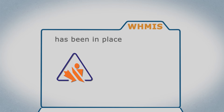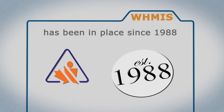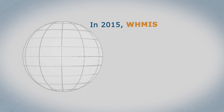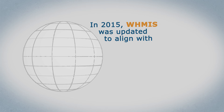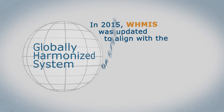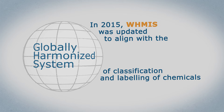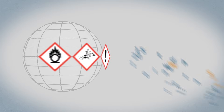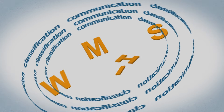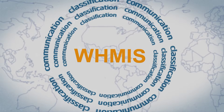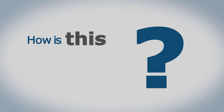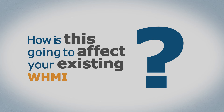WHMIS has been in place since 1988. In 2015, WHMIS was updated to align with the Globally Harmonized System of Classification and Labeling of Chemicals, or GHS. This means that the requirements of WHMIS are now in line with those of the United States and Canada's other trading partners. So, how is this going to affect your existing WHMIS program?